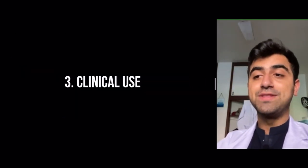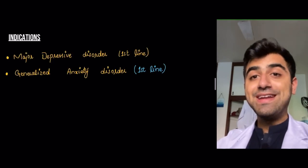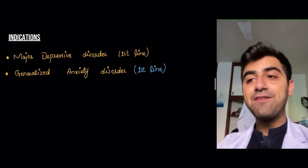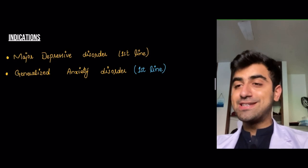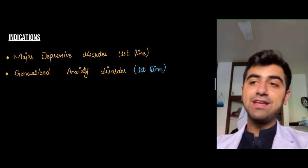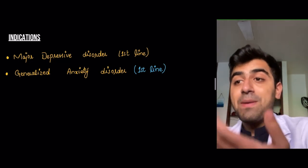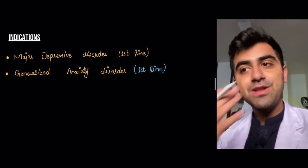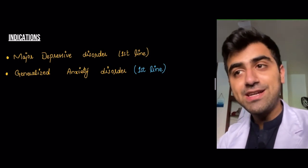SSRIs are indicated as first line for both major depressive disorder (MDD) and generalized anxiety disorder (GAD). A patient presenting with loss of interest, sleep disturbances, decreased appetite, and suicidal ideation has major depressive disorder, and SSRIs would be prescribed. For generalized anxiety disorder, SSRIs are also the first-line pharmacological therapy.